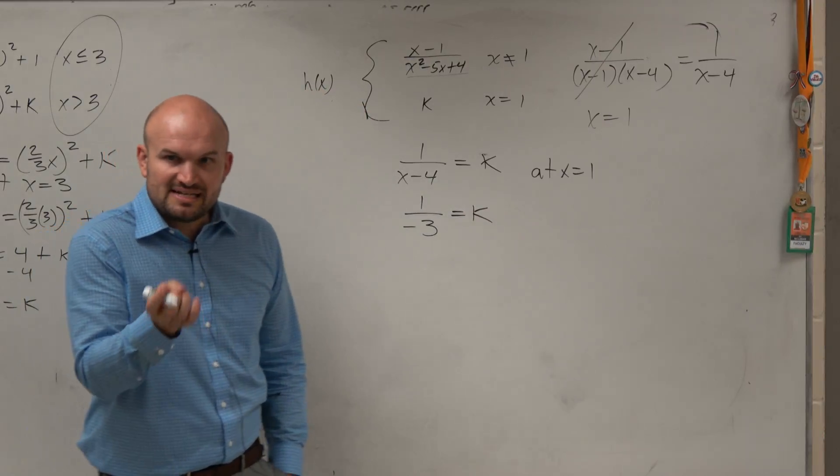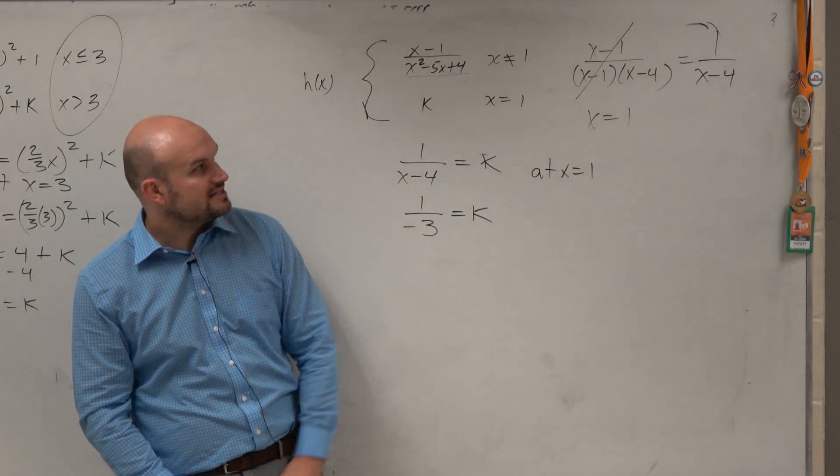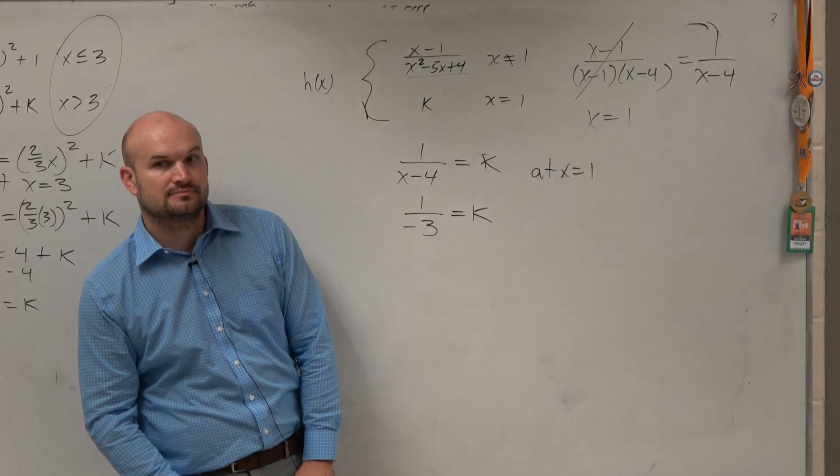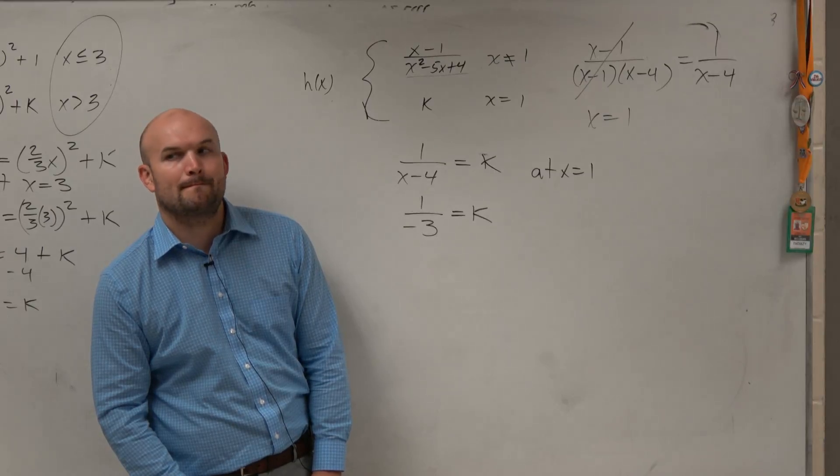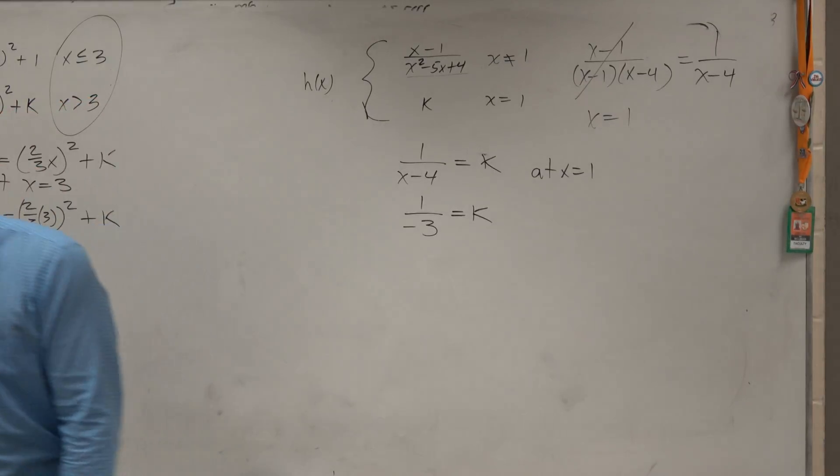So the value k that makes the function continuous is negative 1 third. And there you go.